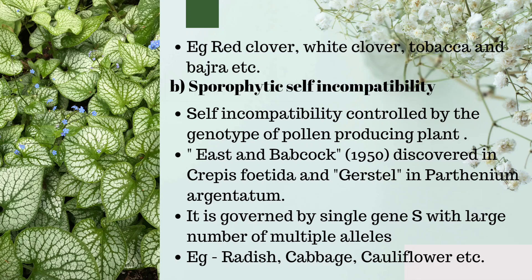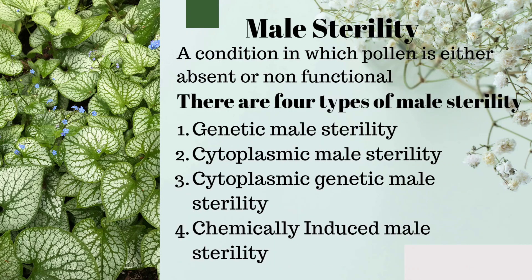Sporophytic self-incompatibility is controlled by the genotype of the pollen-producing plant. East and Bateman discovered it in Crepis foetida, and Gerstel in Parthenium argentatum. It is governed by a single gene S with a large number of multiple alleles. Examples include radish, cabbage, and cauliflower.